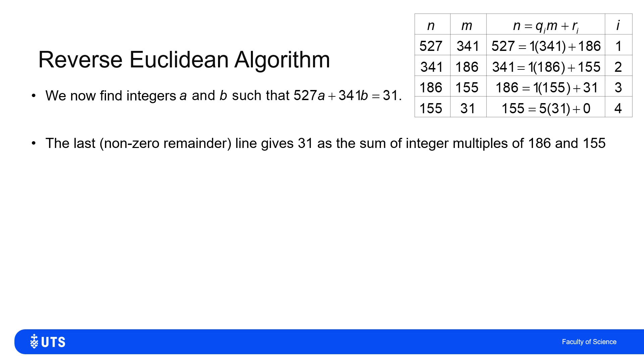If I start at the last non-zero remainder line, it gave me this gcd of 31 as effectively 186 minus 155.